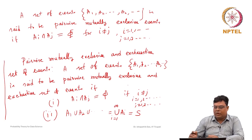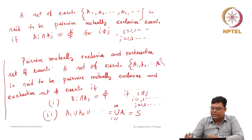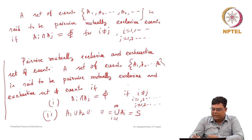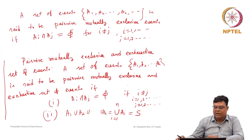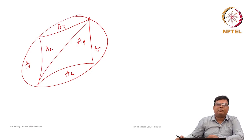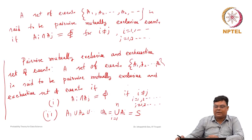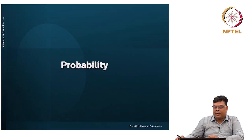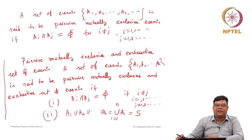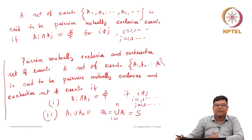For a finite collection, a set of events A1, A2, ..., An is said to be pairwise mutually exclusive and exhaustive if A_i intersection A_j equals phi for i not equal to j, and the union of A_i for i equals 1 to n equals S. These are some of the important concepts: the definition of sample space and the definition of events. Next, we will discuss what is probability.